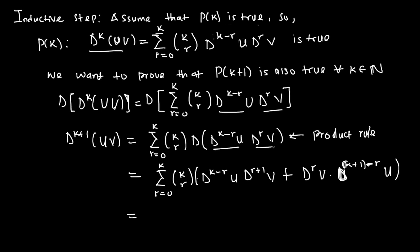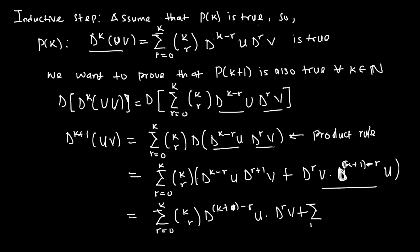Simplifying this further, we now have the (k+1)th derivative of uv equal to the summation of r from 0 to k of C(k,r) times d^(k+1−r)(u)·d^r(v), plus the summation of r from 0 to k of C(k,r) times d^(k−r)(u)·d^(r+1)(v). Let's now try to simplify these two summations.